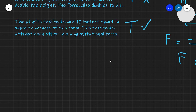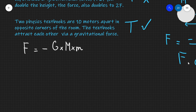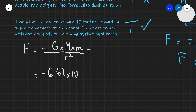Let's do a calculation for the example of two physics textbooks, estimating a few quantities. We apply Newton's law of universal gravitational attraction: the gravitational force equals minus G, the small constant, multiplied by one mass multiplied by the other mass, divided by the separation squared. The constant G is 6.67 times 10 to the power of minus 11.